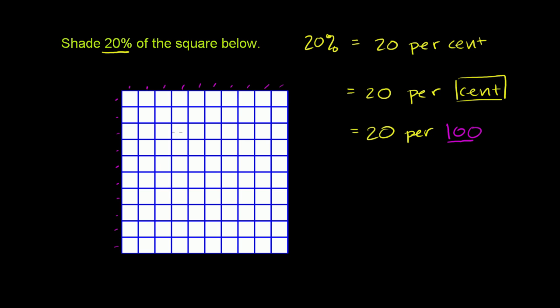So we'll just literally shade in 20 squares. So let me just do 1. So if I just do 1 square just like that, I have just shaded 1 per 100 of the squares. 100 out of 100 would be the whole. I've shaded one of them. That 1 square by itself would be 1% of the entire square.